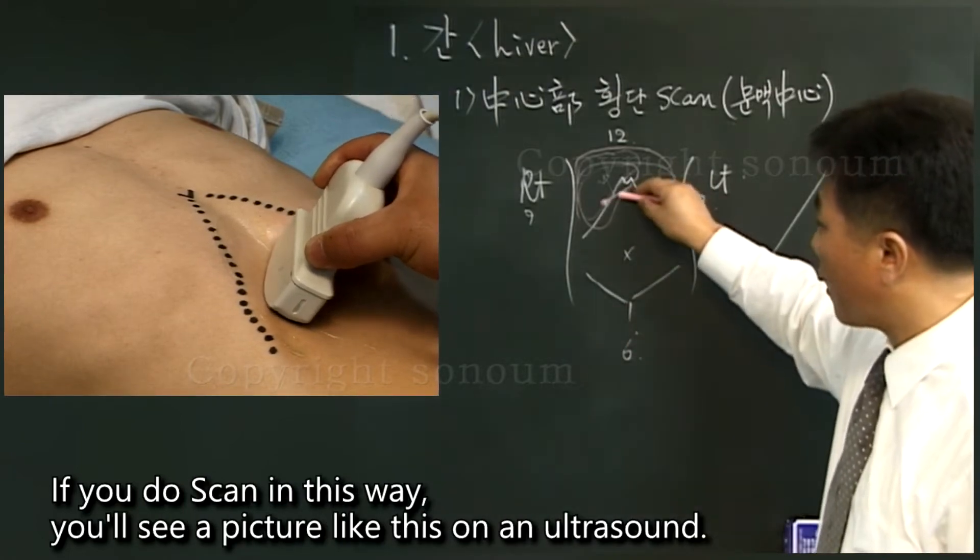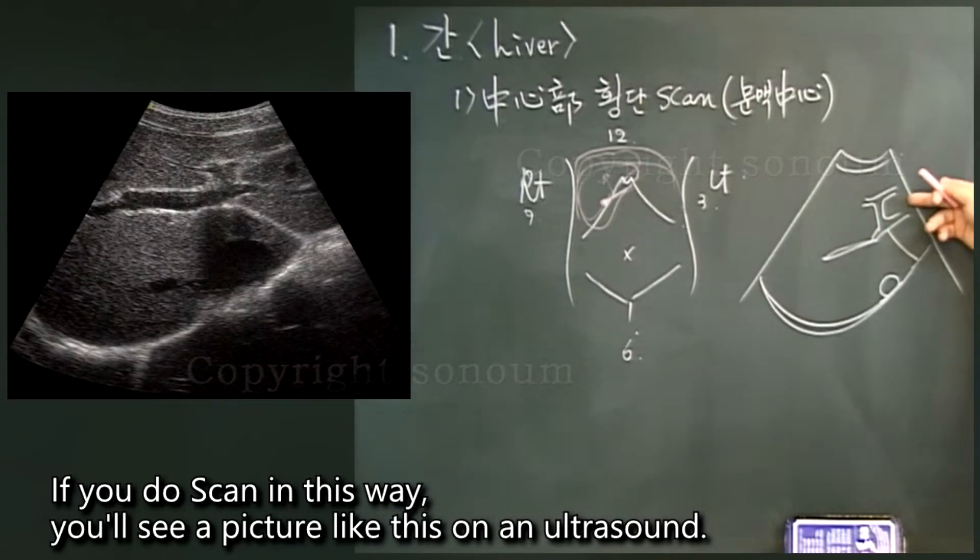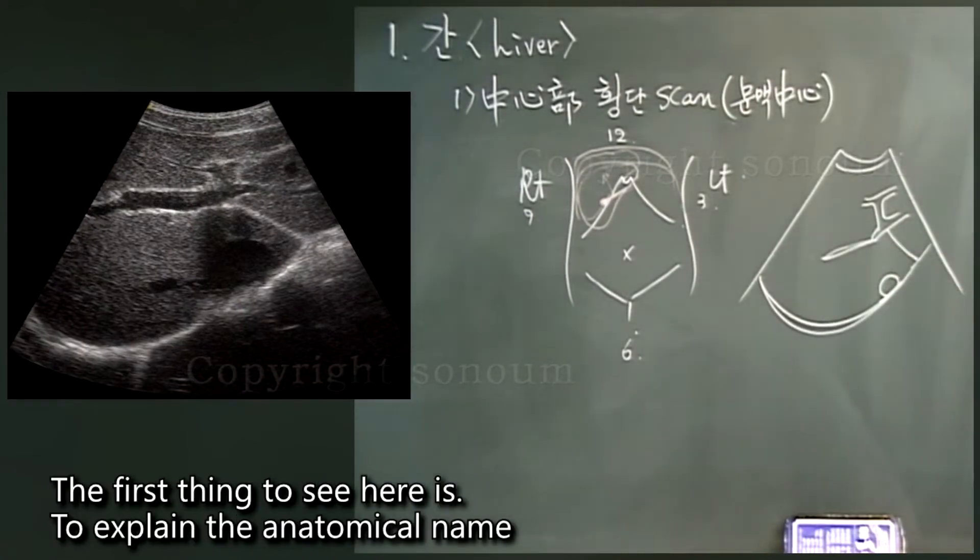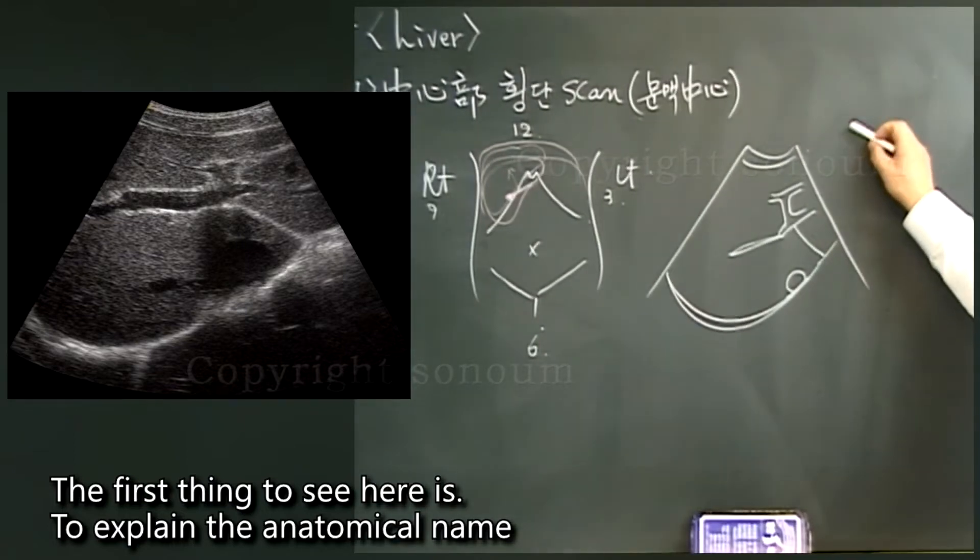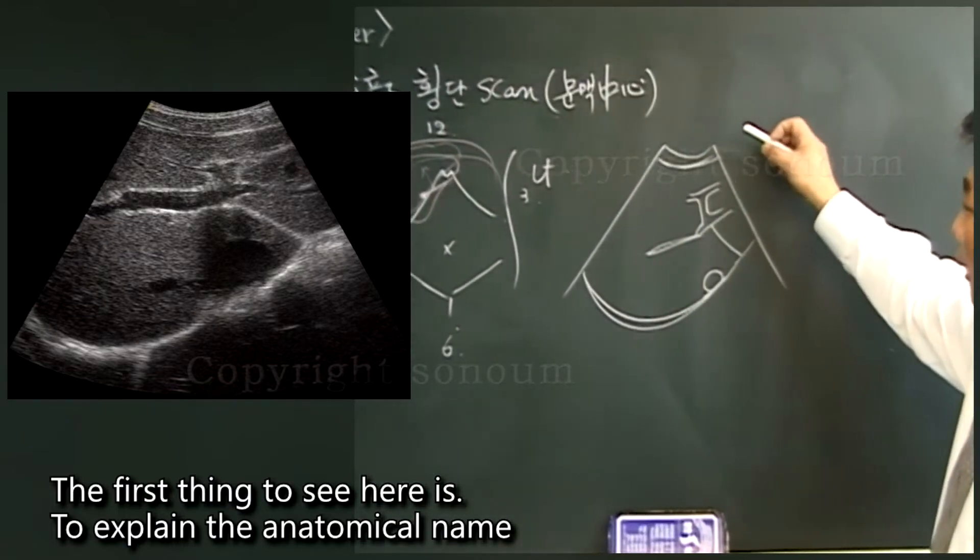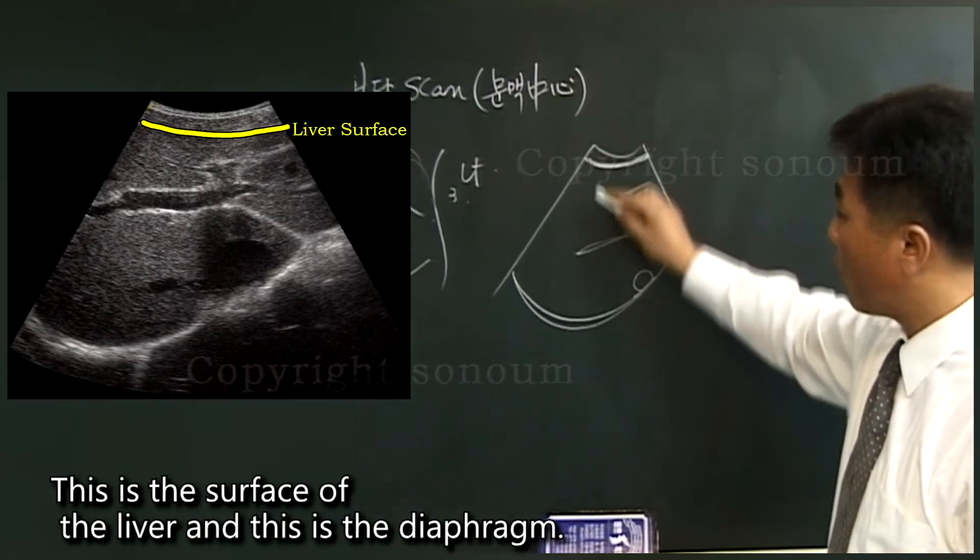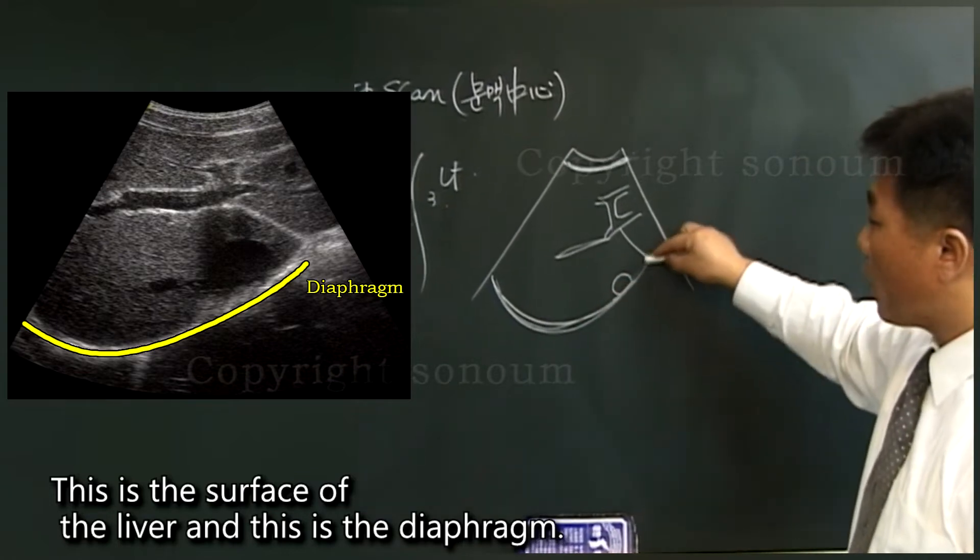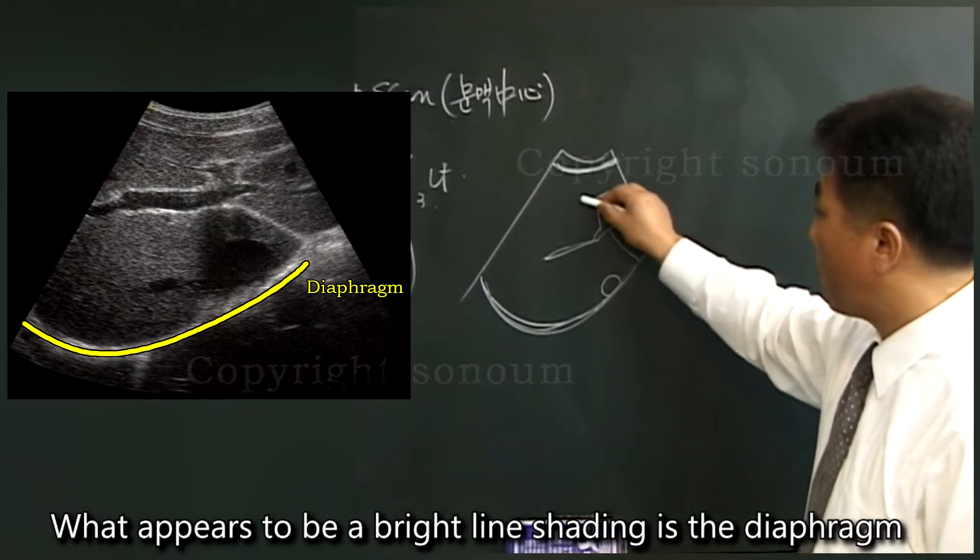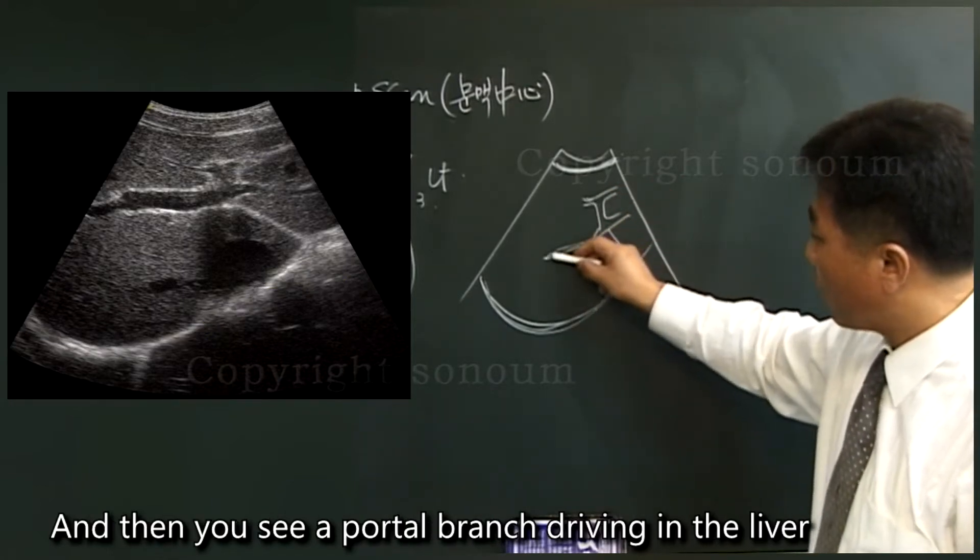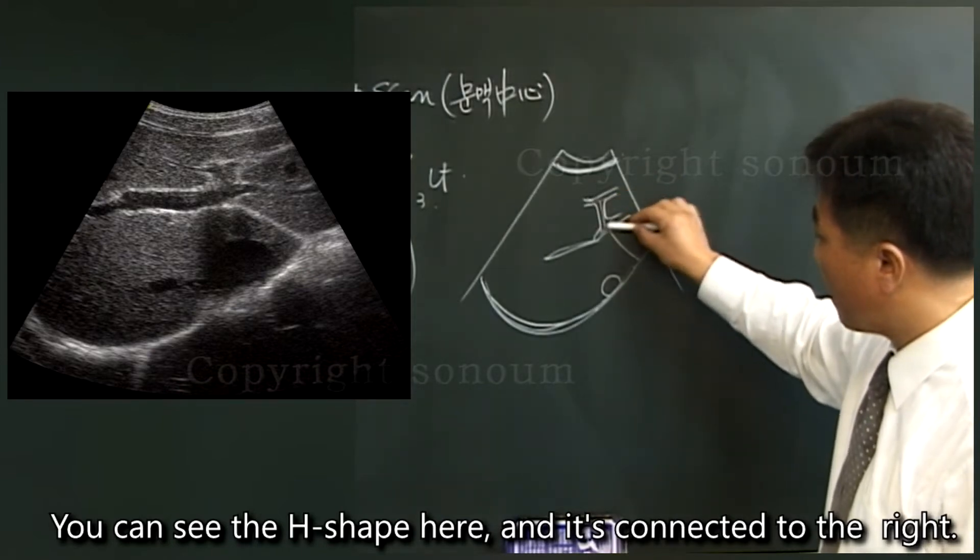If you scan in this way, you'll see a picture like this on an ultrasound. The first thing to see here is to explain the anatomical name. This is the surface of the liver and this is the diaphragm. What appears to be a bright line shading is the diaphragm. And then you see a portal branch driving in the liver.